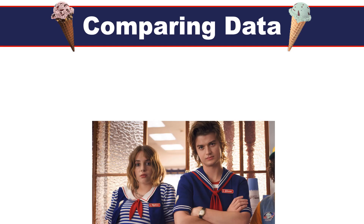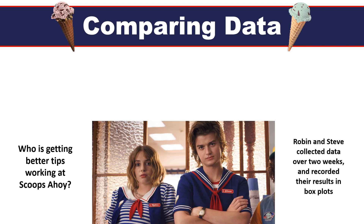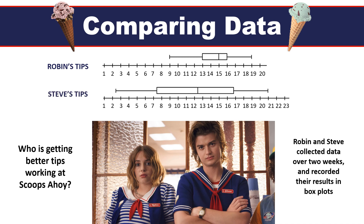Comparing data: here are Steve and Robin, who want to know who is getting better tips working at Scoops Ahoy. Robin and Steve collected data over two weeks and recorded their results in box plots. This is Robin's box plot showing her tips, with the numerical values representing dollars, and Steve's tips over the last two weeks as well. Let's compare and analyze them to see whose tips I would rather have.